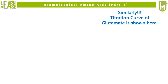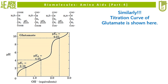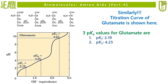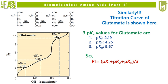Similarly, the titration curve of glutamate is shown here. The image on the left shows the titration curve of glutamate, where pK1 equals 2.19, pK2 equals 4.25, and pKr equals 9.67. Therefore Pi equals the mean of pK1, pK2, and pKr, which on calculation is found to be 5.37. So at pH 5.37 the net electric charge on glutamate is zero.